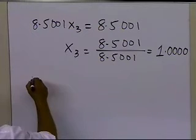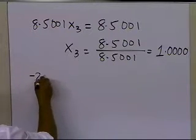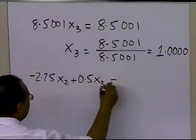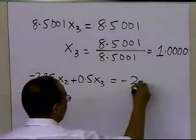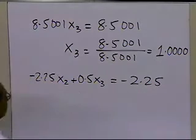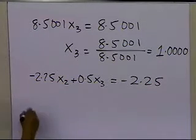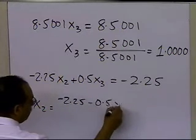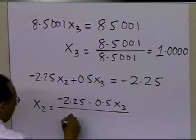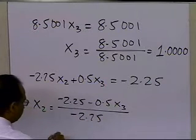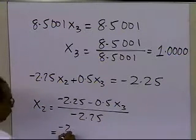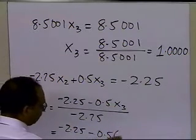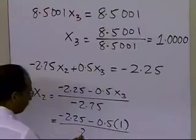Now x2, in order to calculate x2, we have minus 2.75 x2 plus 0.5 x3 equals minus 2.25. So that means x2 equals minus 2.25 minus 0.5 x3 divided by minus 2.75, and that value turns out to be minus 2.25 minus 0.5 times 1 divided by 2.75.